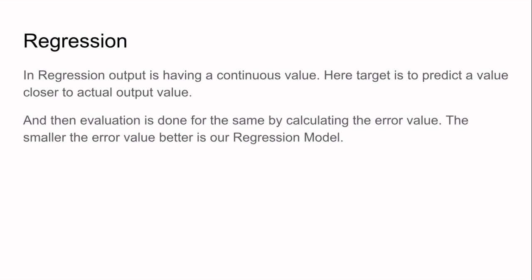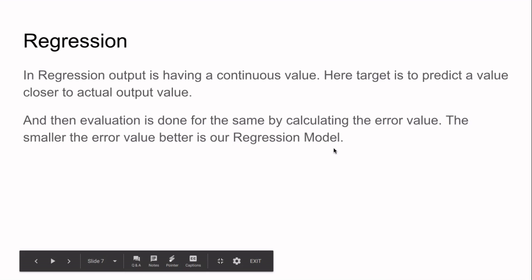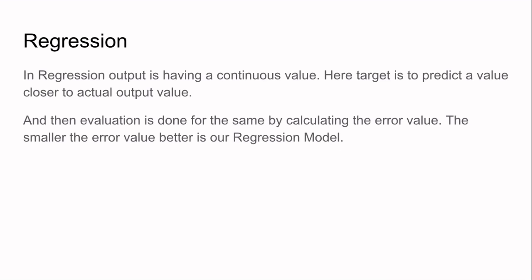In classification we have discontinuous values — for example, particular classification classes. But in regression we have continuous values, so the output can be any value along a continuous function. The function F should be continuous, and evaluation is done by calculating the error value. The smaller the error, the better the regression model.